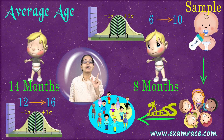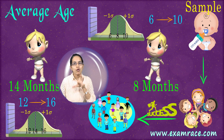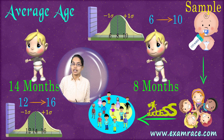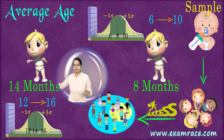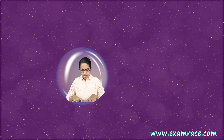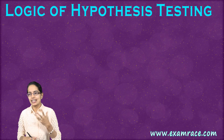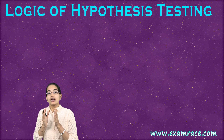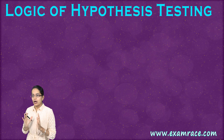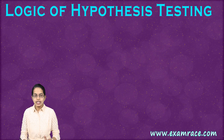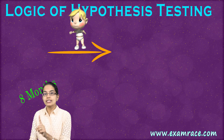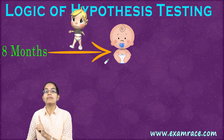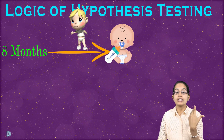The whole idea here is that we are studying only a sample. Once we have a successful result from that sample, we would apply it to the whole population. The core logic of hypothesis testing is very interesting: if babies start to walk at 8 months, that means the vitamin dose I am giving is effective.